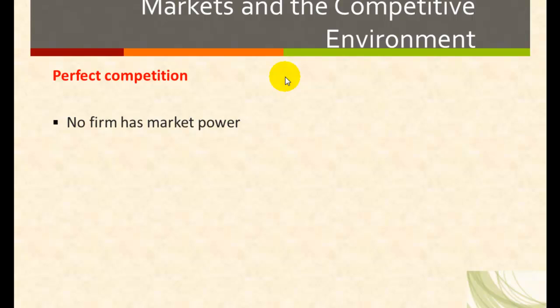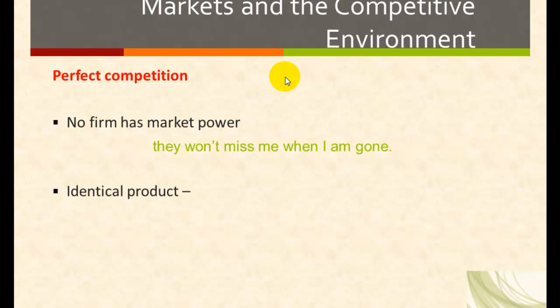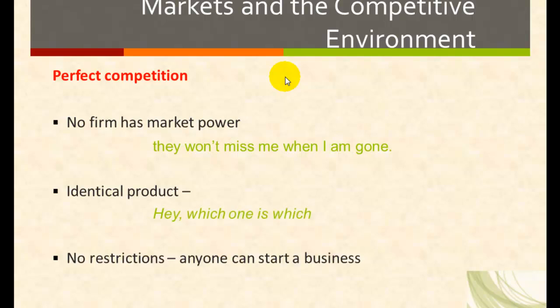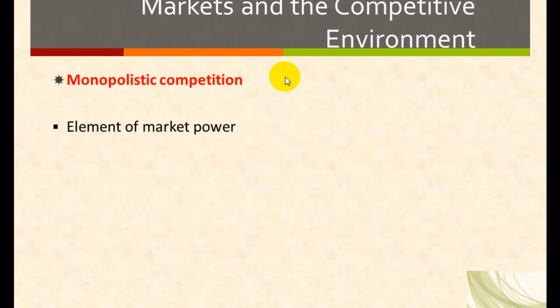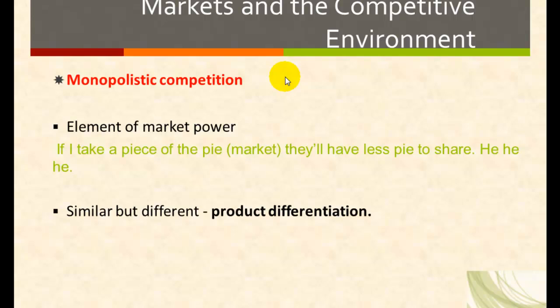Let's review some characteristics of a perfectly competitive industry. No firm in this case has market power — they take prices as given, they are price takers. They produce identical products with no product differentiation, so there's no variety offered in this industry, and there are no restrictions to entry, so anyone can start the business.